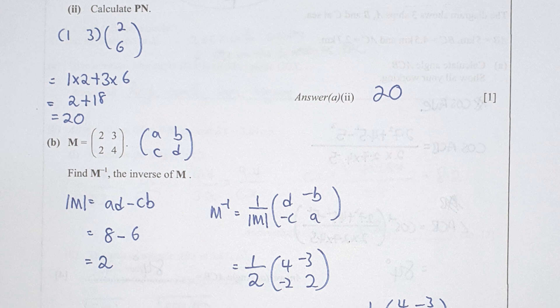For section B, always find the determinant first. The determinant is 2. The inverse M⁻¹ is 1 over the determinant times the rearranged matrix. Listing which values represent a, b, c, and d, then running the rearrangement, the answer is 1 over 2 times the matrix [4, negative 3; negative 2, 2].